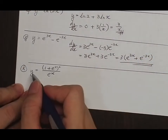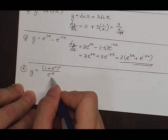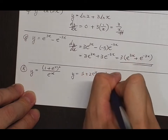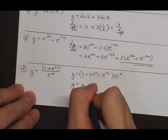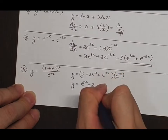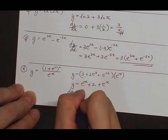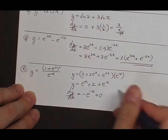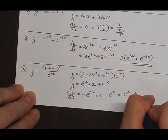Part h: y equals (1 plus eˣ)² over eˣ. Expanding: y equals (1 plus 2eˣ plus e to the 2x) over eˣ, which gives y equals e to the minus x plus 2 plus e to the x. So dy/dx equals minus e to the minus x plus 0 plus e to the x, which equals e to the x minus e to the minus x.